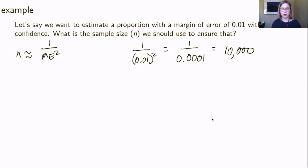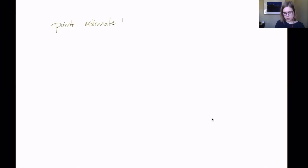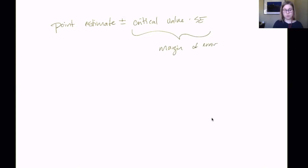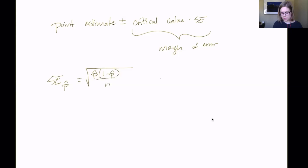To summarize the takeaways: confidence intervals follow the same structure as always — point estimate plus or minus critical value times standard error, where that last part is called the margin of error. For a single proportion, the standard error of p-hat is approximated by the square root of p-hat times 1 minus p-hat over n, and we must check that n times p is greater than or equal to 10 and n times 1 minus p is greater than or equal to 10.